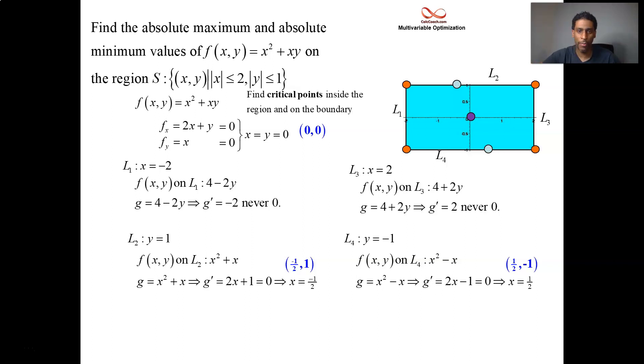What's left? Corner points, in the club. Let's throw them all in. Check the z value. Whoever gives it the biggest, absolute max. Whoever gives it the smallest, absolute min.